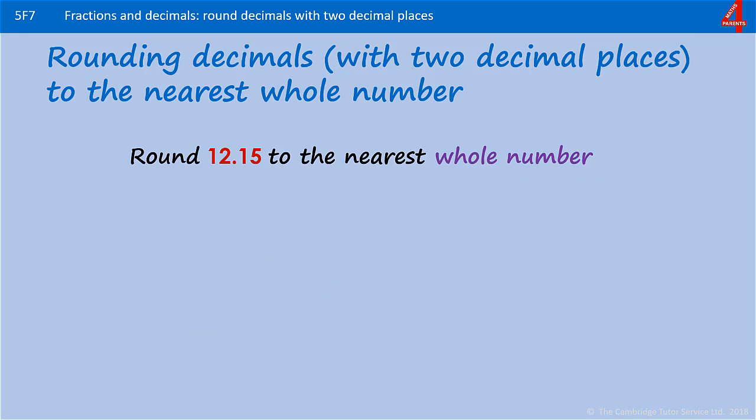Pause the video, have a go at 12.15 rounded to the nearest whole number. The whole number is 12. We look at the tenths column, that's just a 1. We don't worry about what's in the hundredth. That 1 tells us that we're rounding down. So that 12 stays as 12.